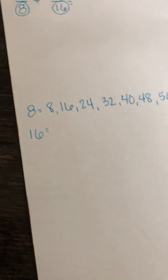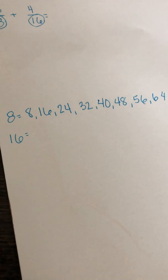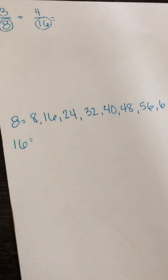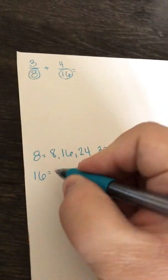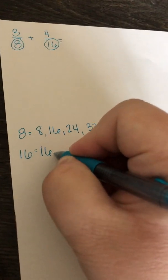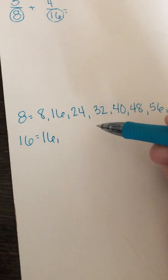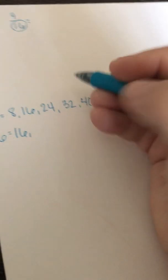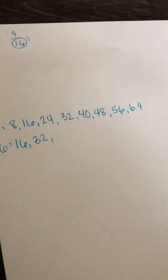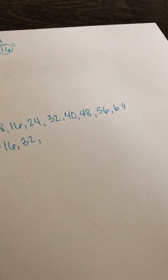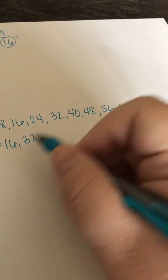Now, sixteenths are a little bit trickier because we have not been working on sixteenths really. But we can do it because just like 12 is a 10 and a 2, sixteenths are a 10 and a 6. So our first one is 16. If we add a 10 to that, that's 26, plus 6 more is 32. And then we have 10 more for that — that would be 42, plus 6 more would be 48.